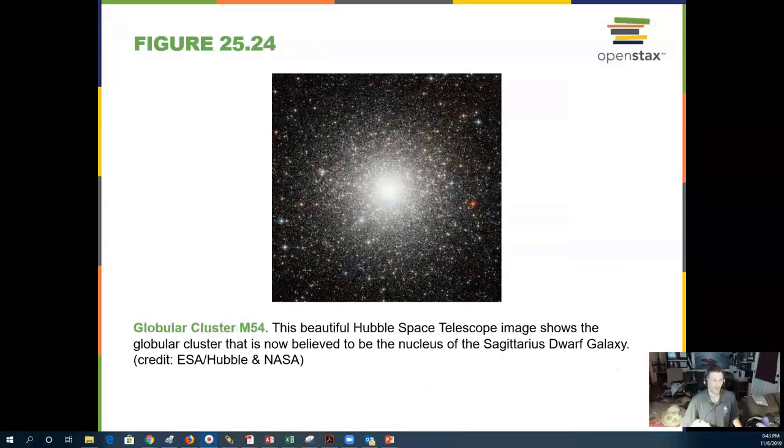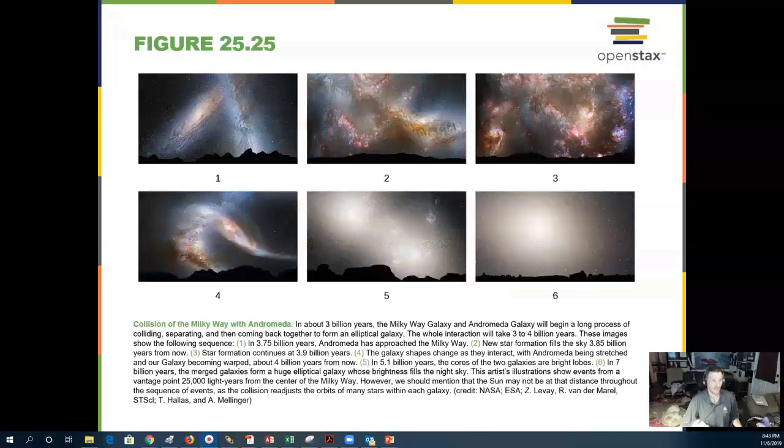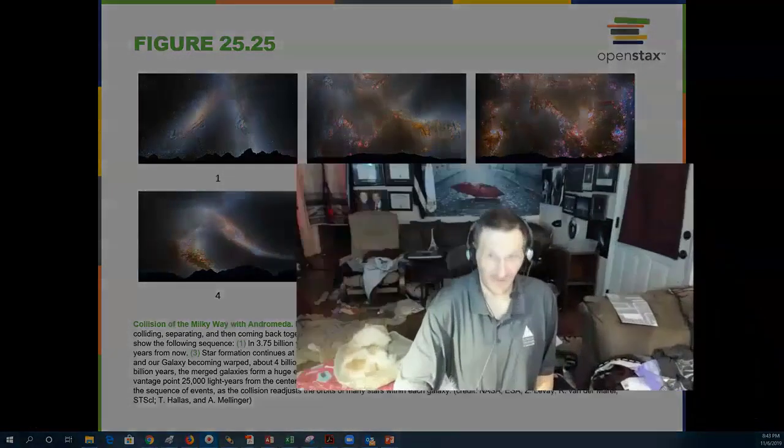Here's a globular cluster that goes around our galaxy. This is M54, taken by the Hubble Space Telescope. Someday into the future, Andromeda galaxy will collide with the Milky Way galaxy. And what will that look like? Well, there are a number of versions that people have put together here. We hope you enjoy that.